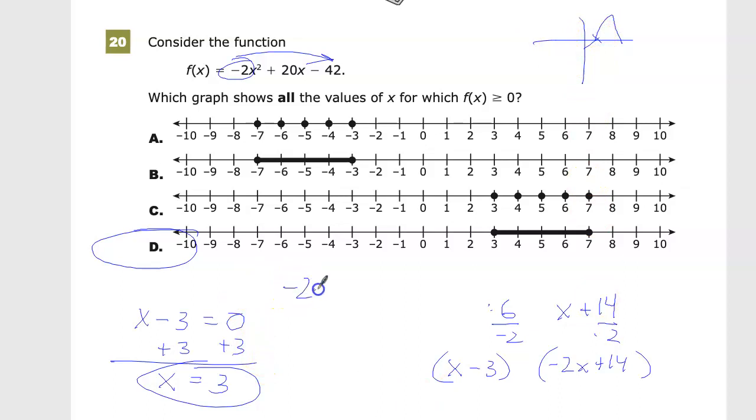For the other factor, -2x + 14 = 0, I subtract 14 from both sides to get -2x = -14, then divide by -2 to get x = 7. Both of these give you your zeros, and the numbers between those two give you your final answer.